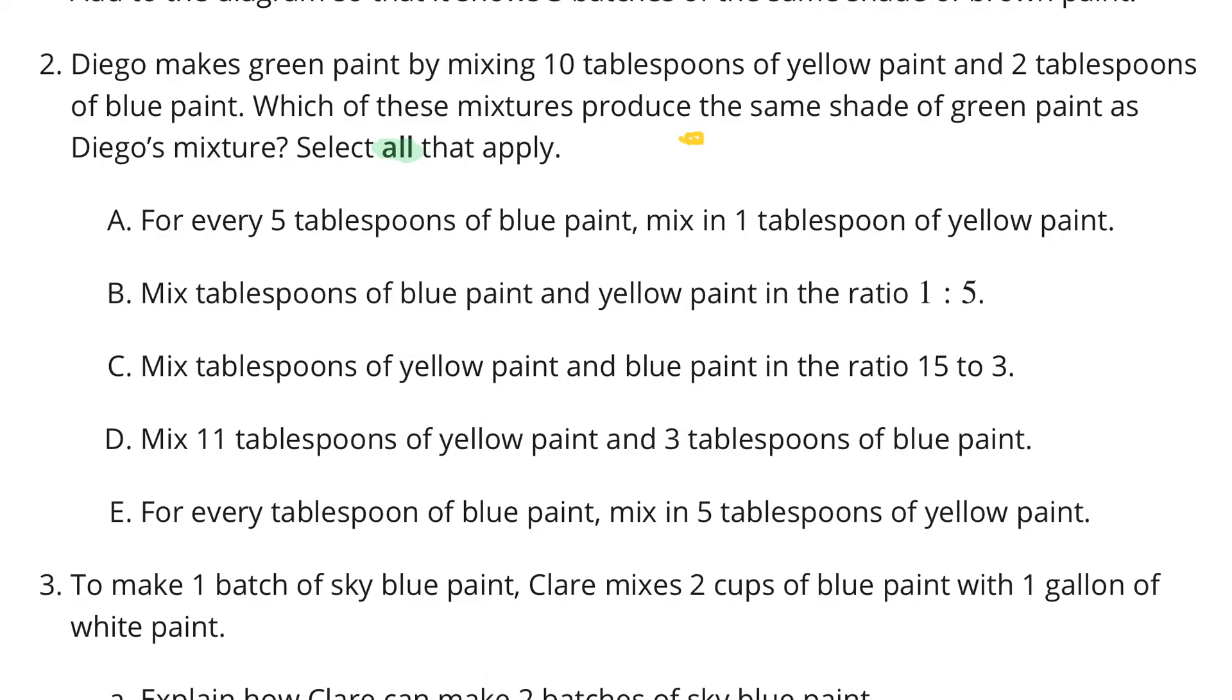We have one, two, three, four, five, six, seven, eight, nine, ten yellow. And we have then one, two of blue. So, for every five tablespoons of blue paint, mix in one tablespoon of yellow paint. That order is not right. I can see five yellow for one blue, but not five blue for one yellow. So, A is not an answer here.